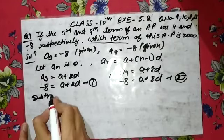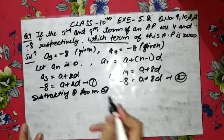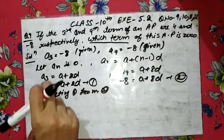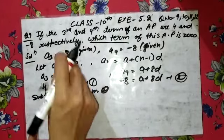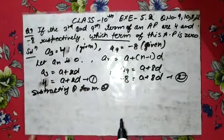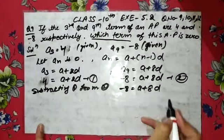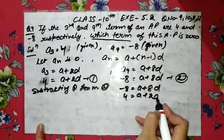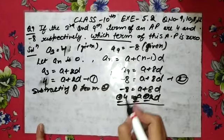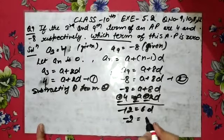Subtracting the first equation from the second — a3 gives us 4 (not minus 8, sorry, the first term is 4). So: minus 8 = a + 8d, and 4 = a + 2d. Subtracting: minus 12 = 6d, therefore d = minus 2.